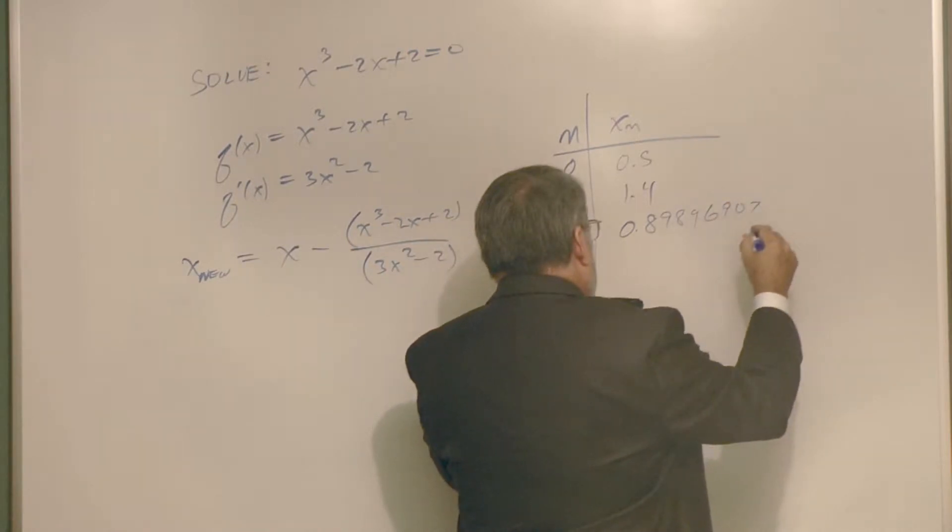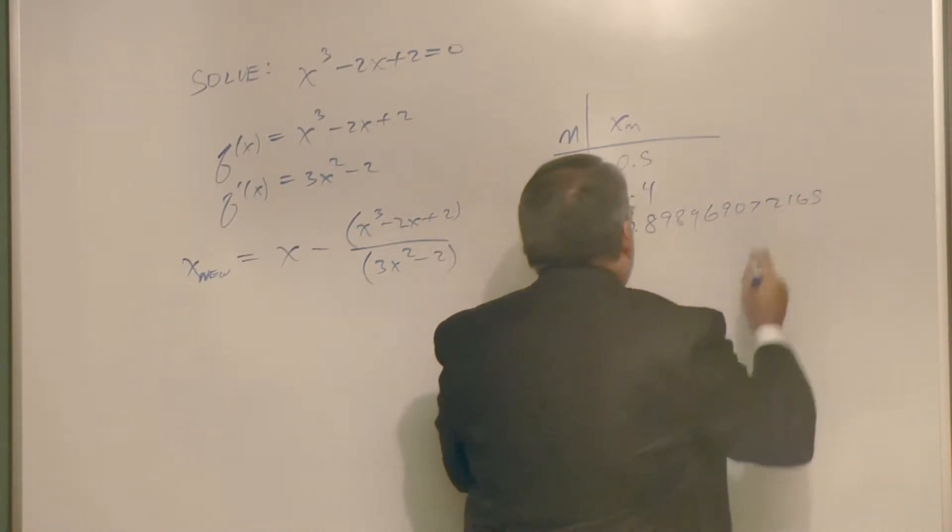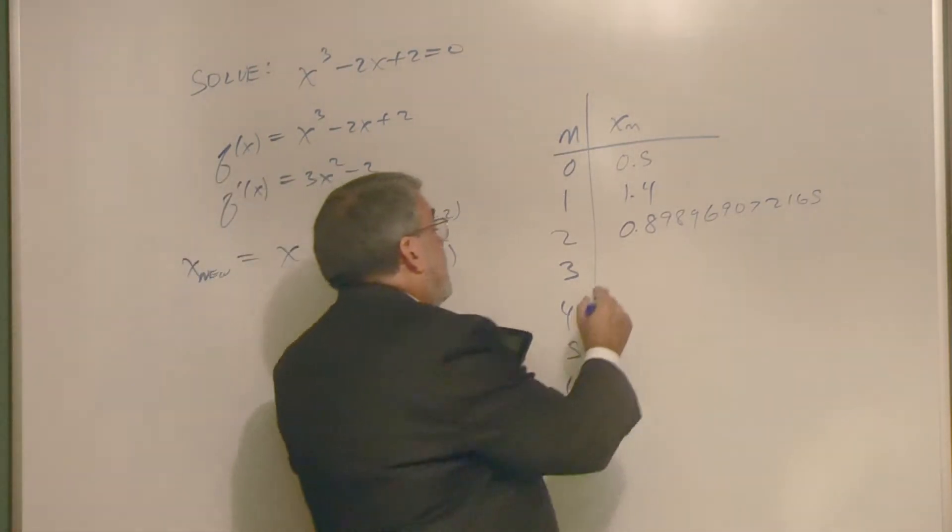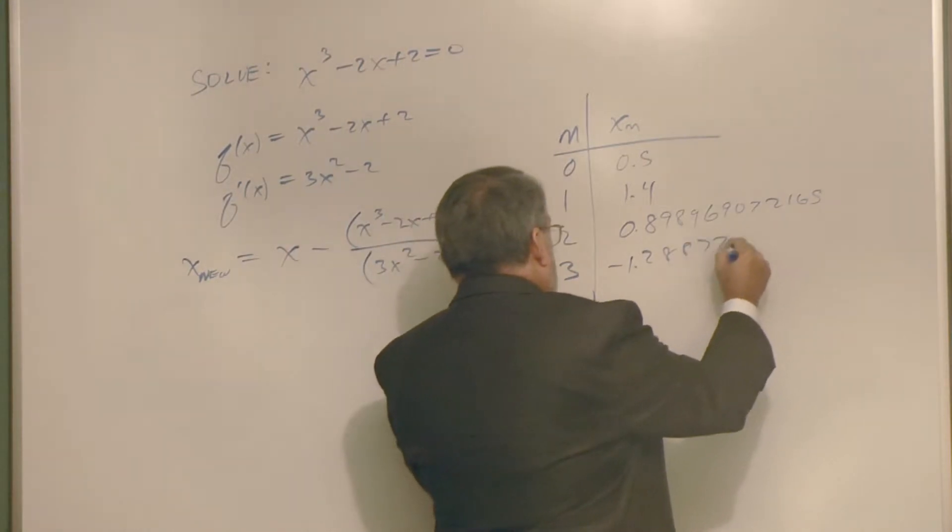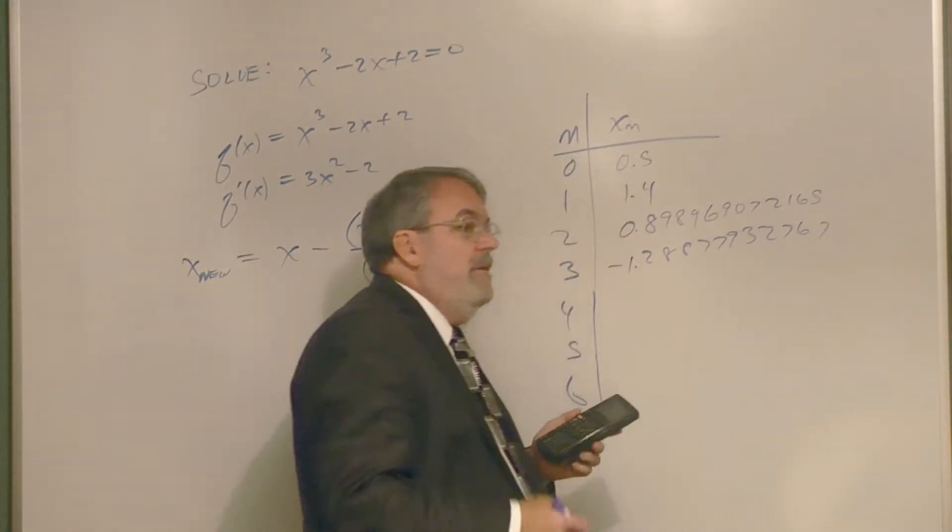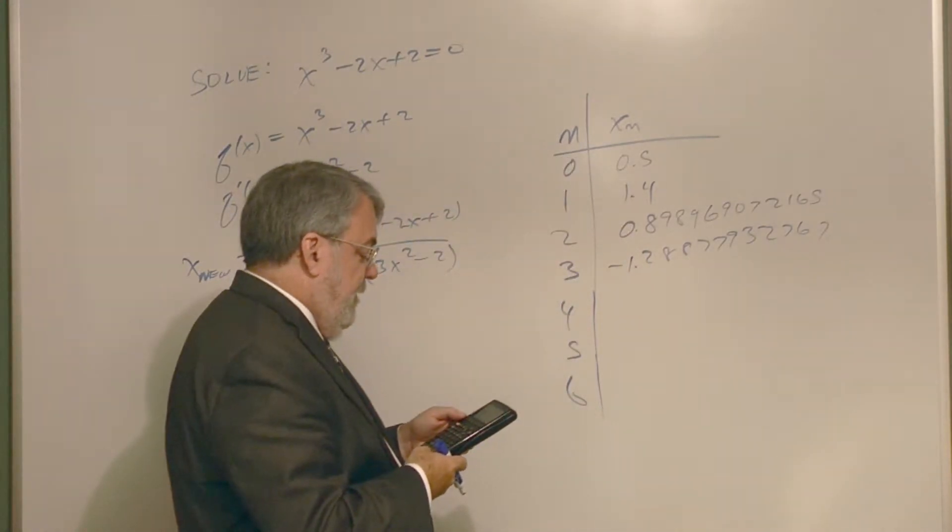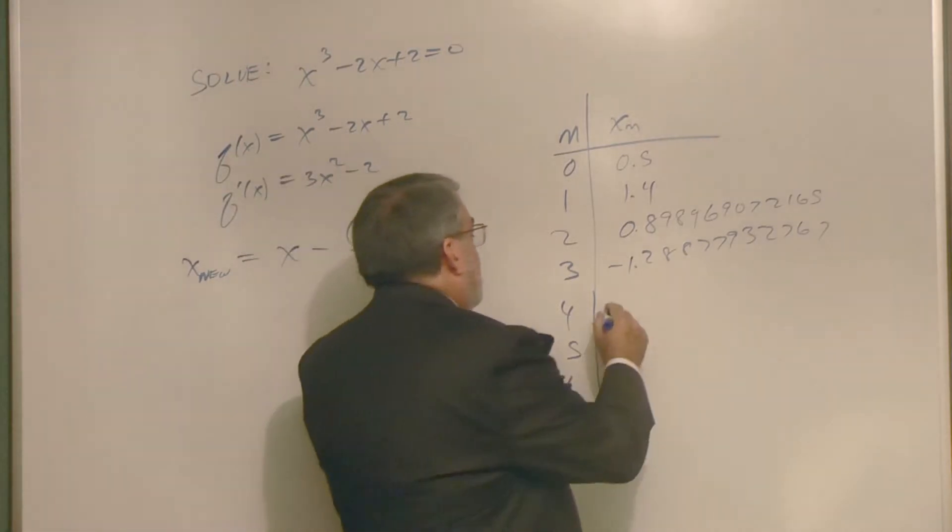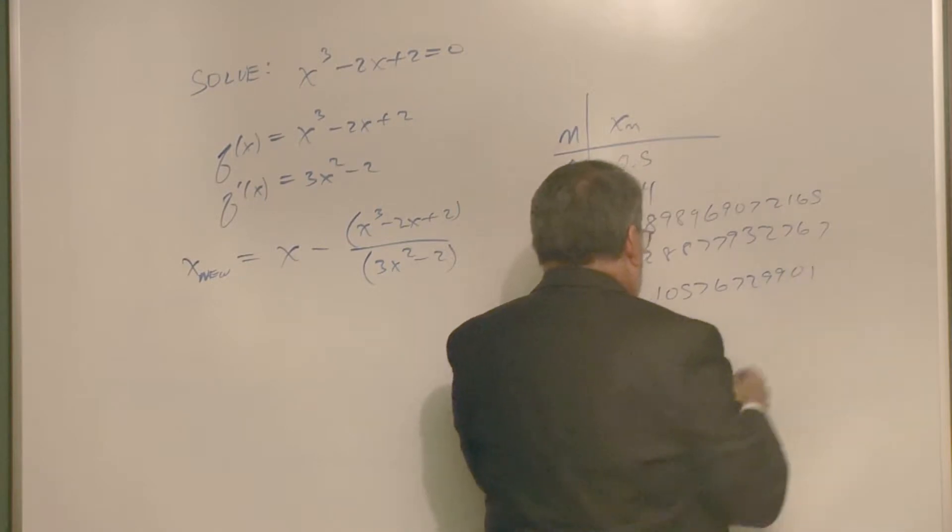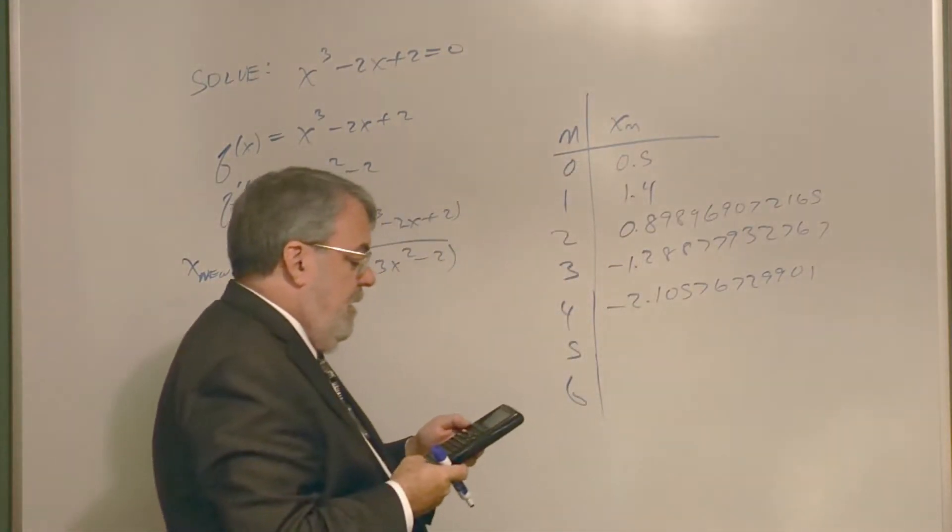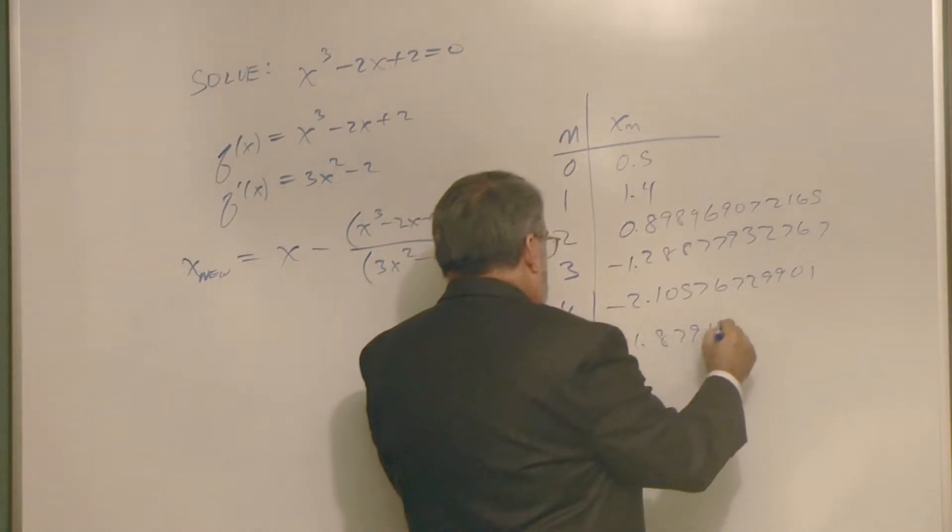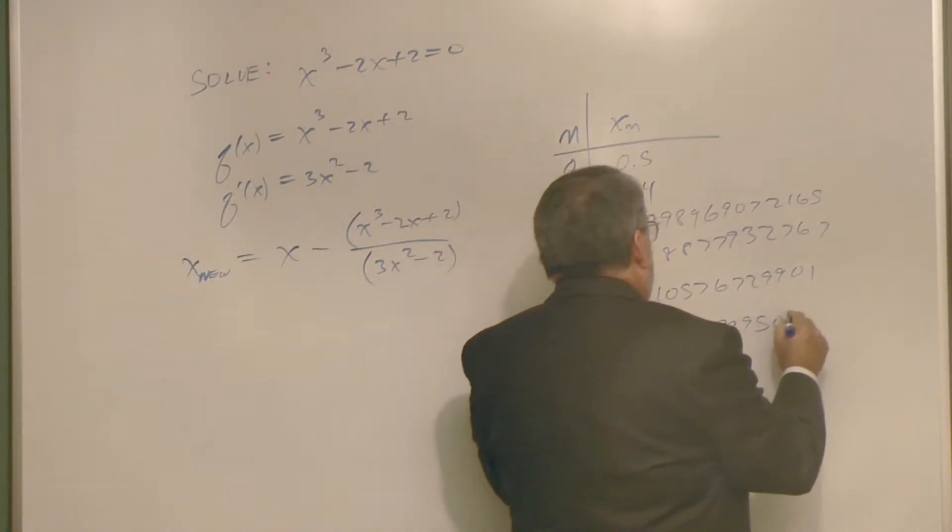And then do it again I get negative 1.288779327. Whoo, is this going to converge? That's kind of way off there. Minus 2.10576729901 and minus 1.82919995046.